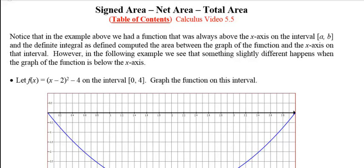However, in the following example we see that something slightly different happens when the graph of the function is below the x-axis. So let f(x) be (x-2)² - 4 on the interval from 0 to 4 and then graph the function.